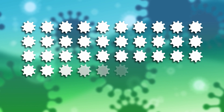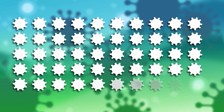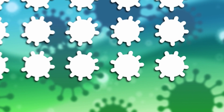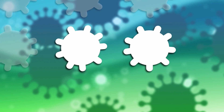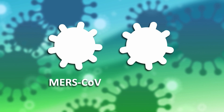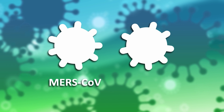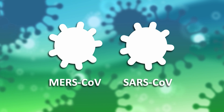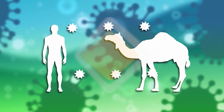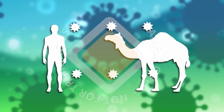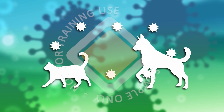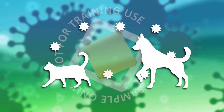Coronaviruses are a large group of viruses that can cause illnesses ranging from the common cold to more severe diseases, such as Middle East Respiratory Syndrome, MERS-CoV, and Severe Acute Respiratory Syndrome, SARS-CoV. Coronaviruses can be transmitted between animals and people. Several known coronaviruses are circulating in animals that have not yet infected humans.